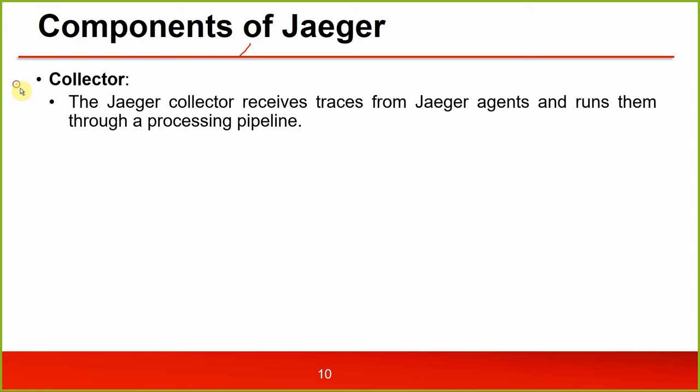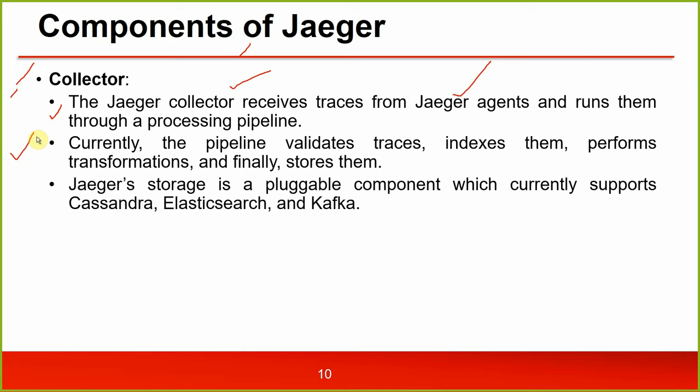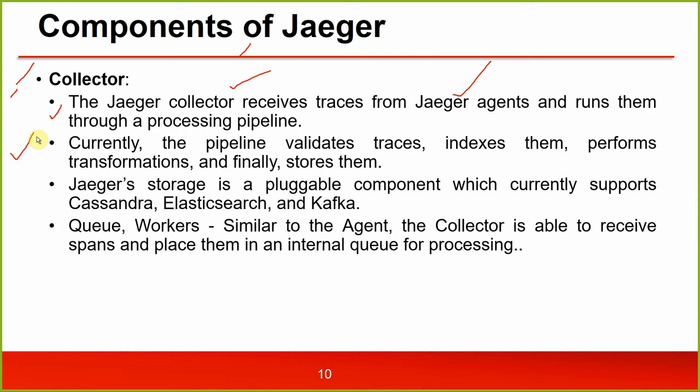Then we have the collector - the Jaeger collector receives traces from the Jaeger agent and runs them through the processing pipeline. Currently the pipeline validates traces, indexes them, performs transformations, and finally stores them. Jaeger storage is a pluggable component which currently supports Cassandra, Elasticsearch, and Kafka - though as of now it's effectively only Elasticsearch. The collector is also able to receive spans and place them in an internal queue for processing.